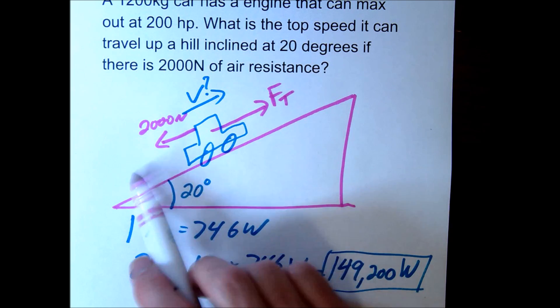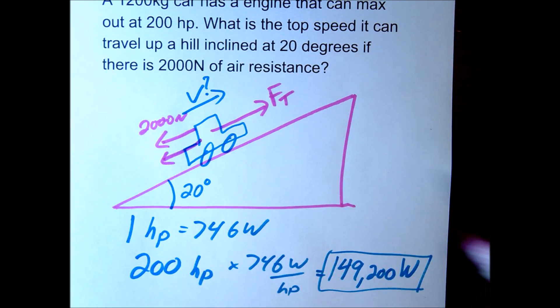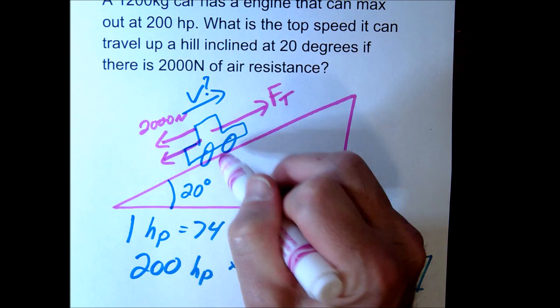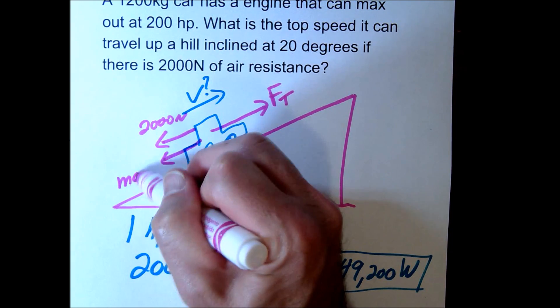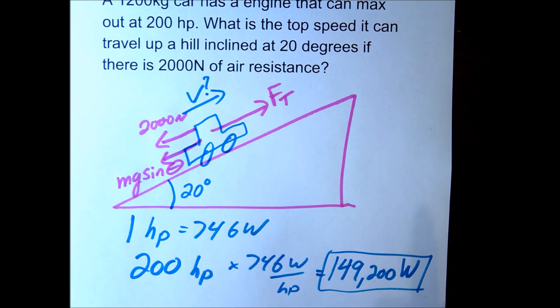And then we have our inclines. We have gravity, the component of gravity pulling downwards. How much gravity is pulling down and hopefully at this point you can do that quickly. That's going to be mg sine of theta.